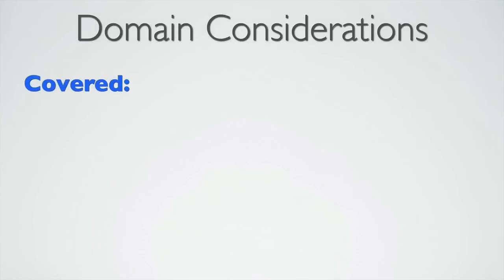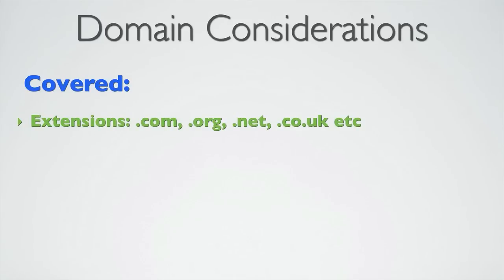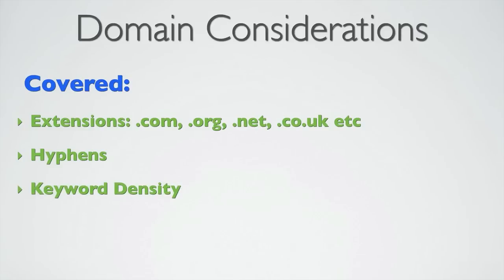In this section, we've covered extensions — .com, .org, .net, .co.uk — hyphenated domains, keyword density in domains, and prefixes and suffixes in domains. It may surprise you how much there is to consider when choosing a domain name, and it's probably one of the reasons many seasoned internet marketers tend to register multiple domains in their chosen niches. It helps prevent your competition from acquiring them and allows you to develop them and dominate your niche.